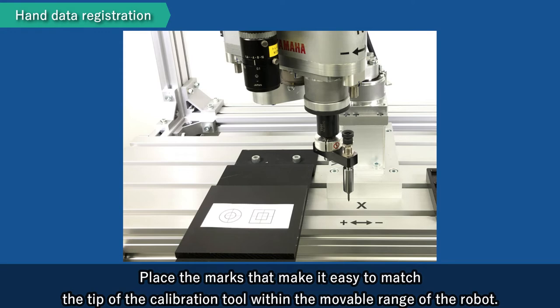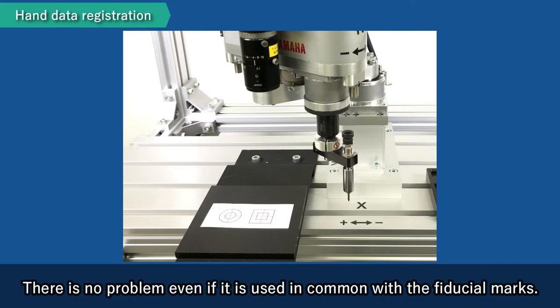Place the marks that make it easy to match the tip of the calibration tool within the movable range of the robot. There is no problem even if it is used in common with the fiducial marks.